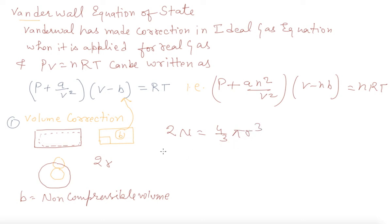2N is equal to 4 by 3 pi R cube. And then because of that R is equal to 2R, then it becomes 2N is equal to 8 into 4 by 3 pi R cube. And then N is equal to 4 multiply 4 by 3 pi R cube.